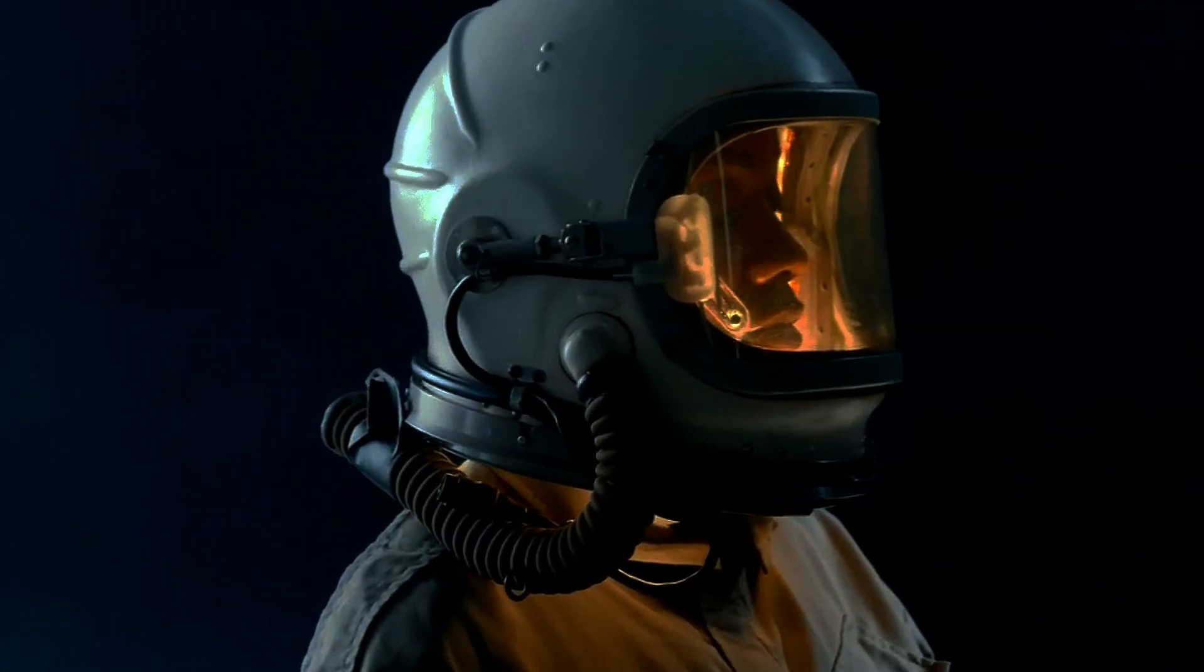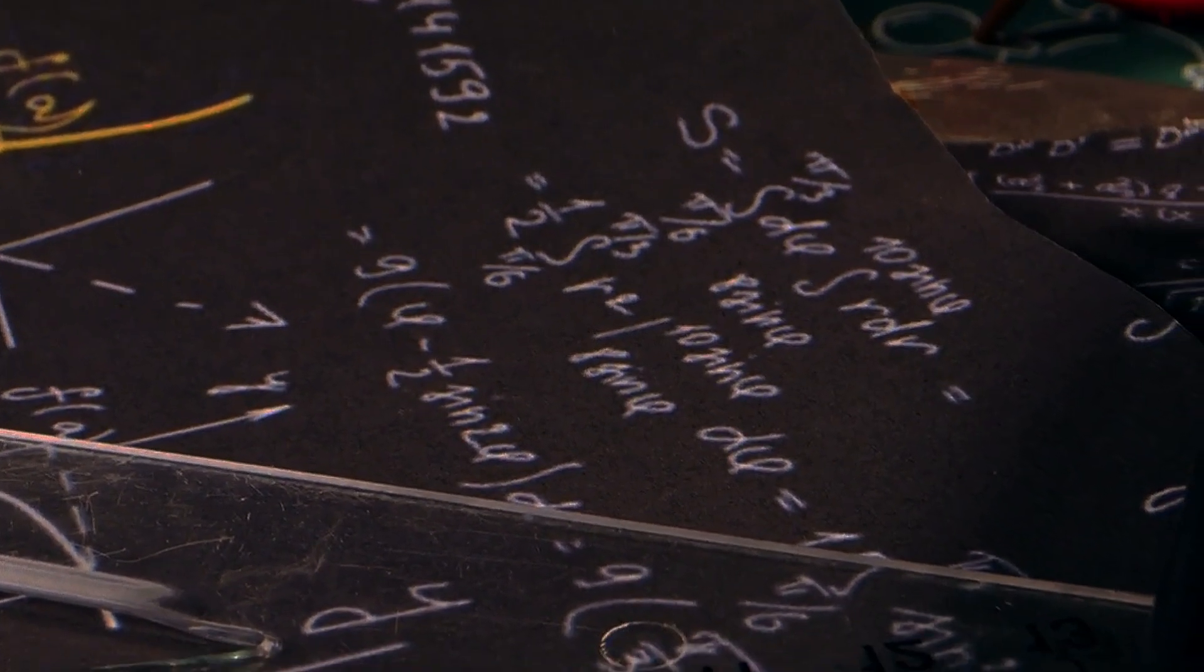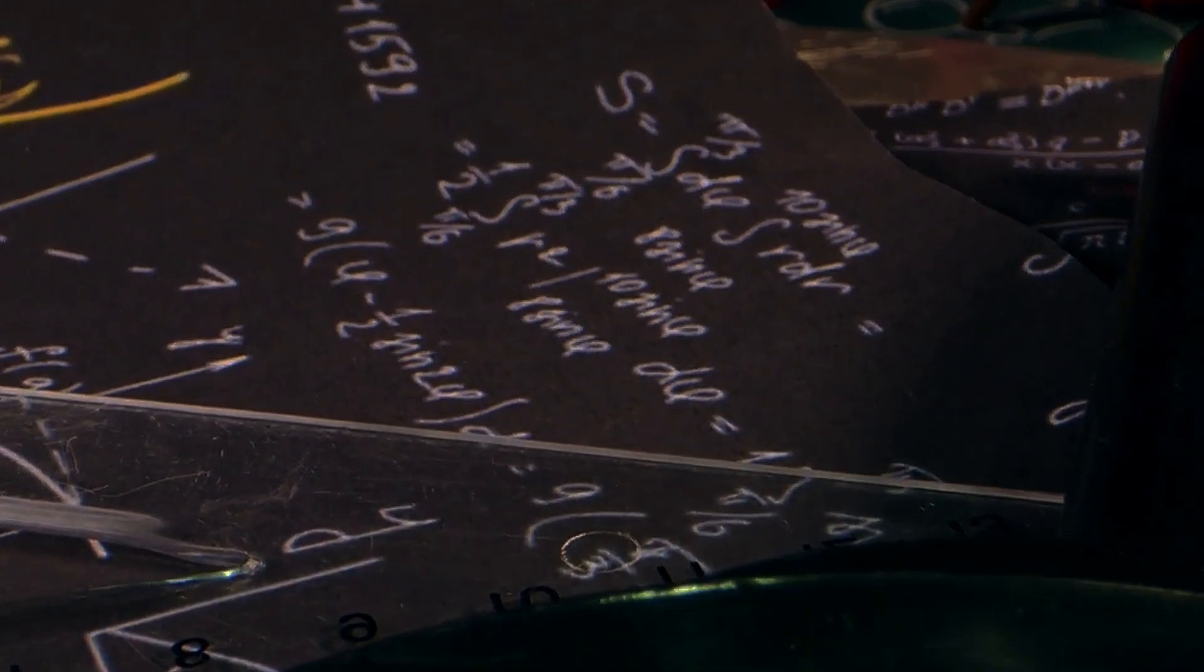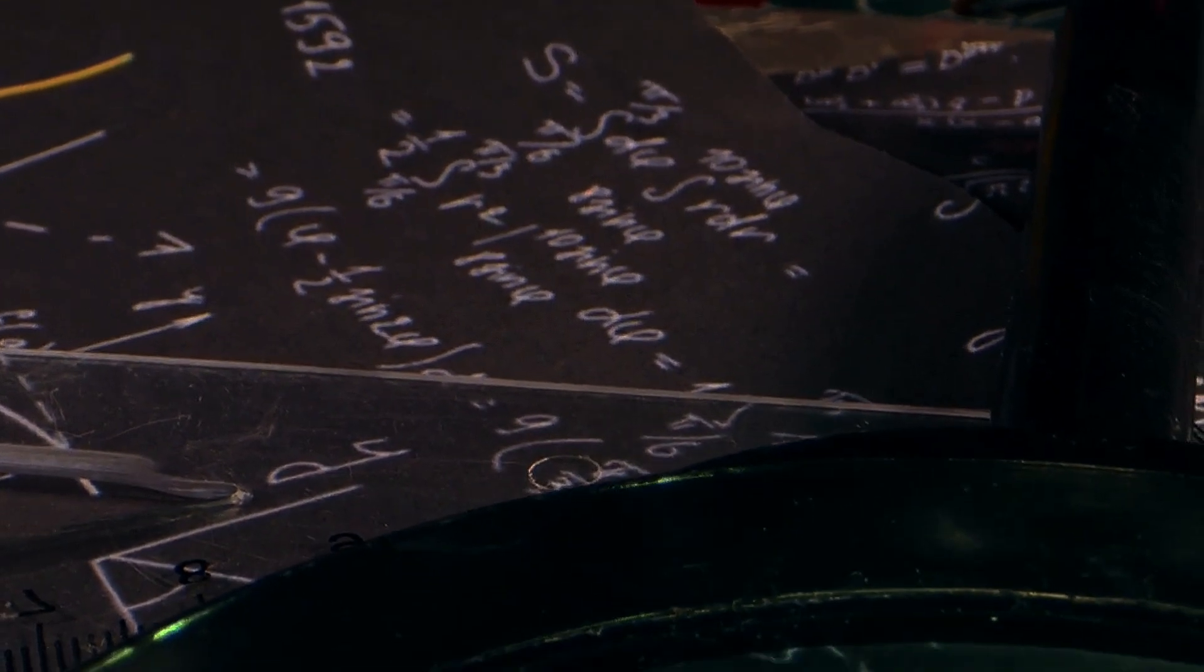Then there's the Brands-Dicker theory. Named after Karl Brands and Robert Dicker, this theory introduces a variable gravitational constant. It suggests that gravity could change over time or space.